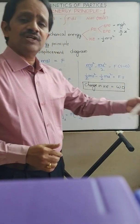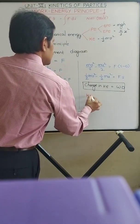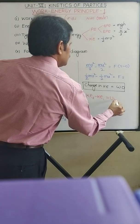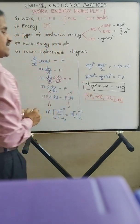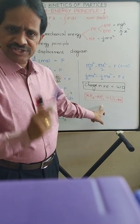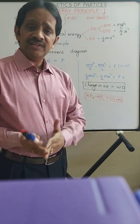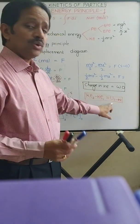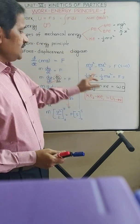So, change in kinetic energy is equal to work done. Symbolically, it can be represented as KE₂ − KE₁ = work done between positions 1 and 2, where 1 and 2 are the positions. KE₁ is the kinetic energy at the initial position, KE₂ is the kinetic energy at the final position, and this equals the total work done by all the forces active in the system between the initial and final positions. This is known as the work-energy principle.